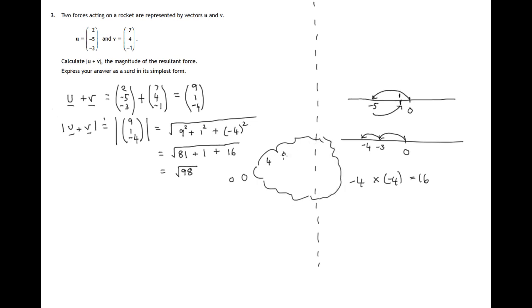It helps to know your perfect square numbers: 4, 9, 16, 25, 36, 49, 64.